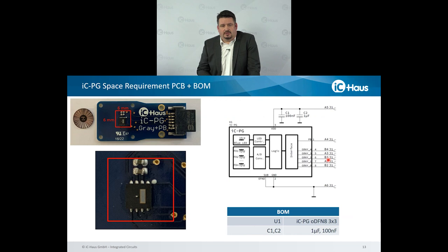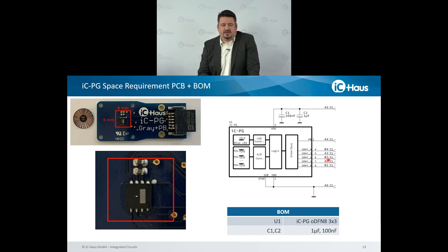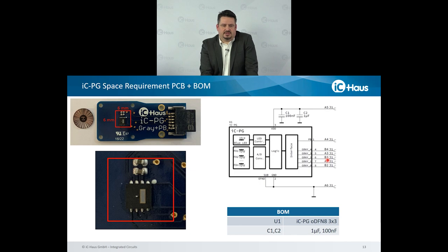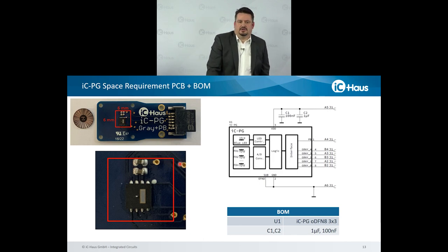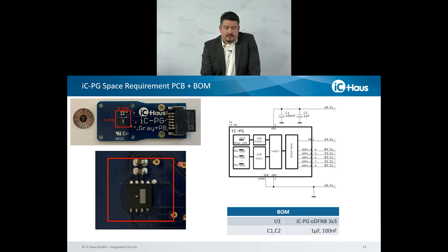So let's talk about space requirement, because as we talk about mini-encoder applications, space on the PC board or inside a system is quite limited. As you can see for the ICPG, and also from the schematic on the right side, beside the ICPG you only need certain two standard capacitors on the supply voltage. Combined with the code disk and the space of quite conservative 6-by-6 millimeter, you have a functional reflective optical sensor system with 30 absolute positions.